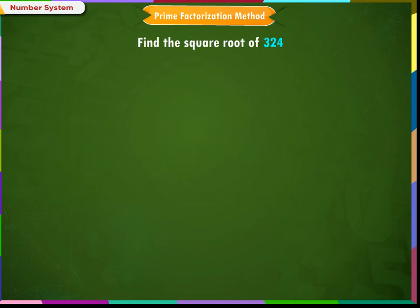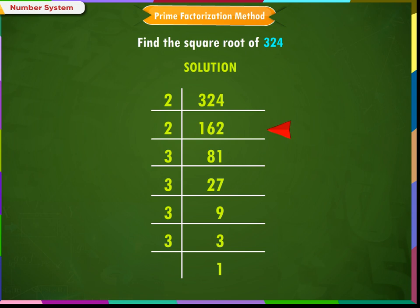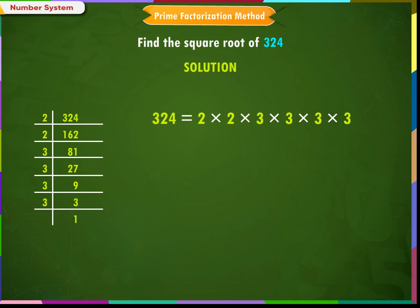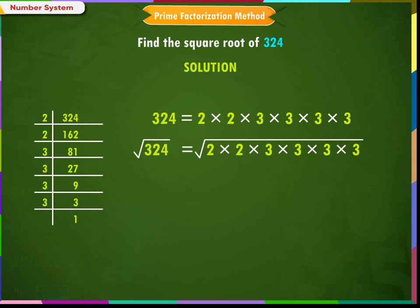Example 2: Find the square root of 324. Solution: Find the prime factors of 324. 324 ÷ 2 = 162; 162 ÷ 2 = 81; 81 ÷ 3 = 27; 27 ÷ 3 = 9; 9 ÷ 3 = 3. So, 324 = 2 × 2 × 3 × 3 × 3 × 3. √324 = √(2 × 2 × 3 × 3 × 3 × 3) = 2 × 3 × 3. Therefore, √324 = 18.